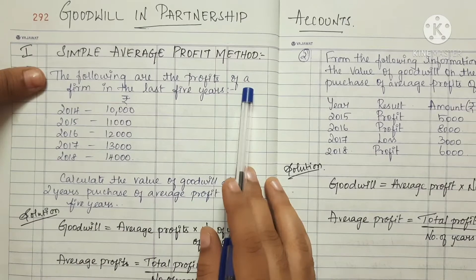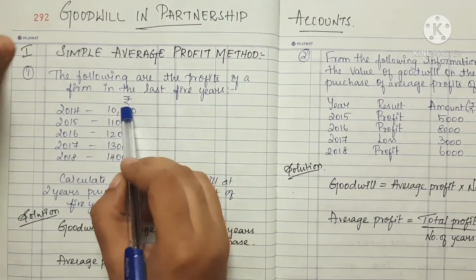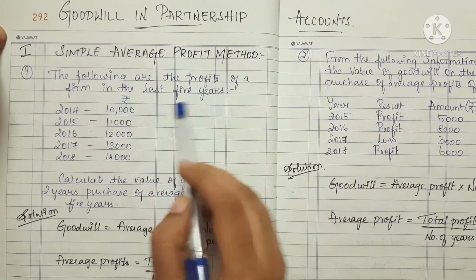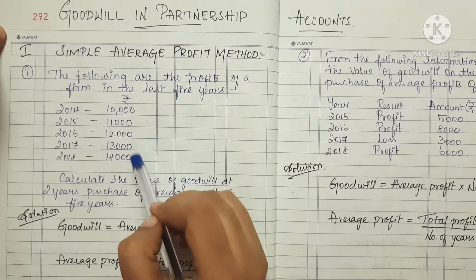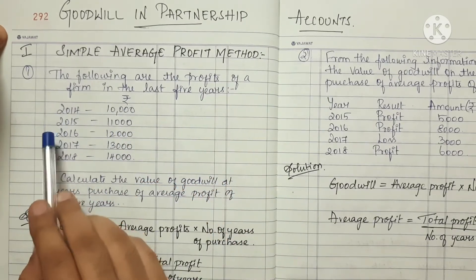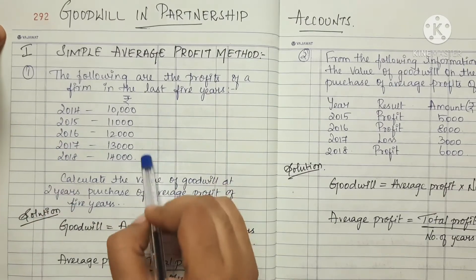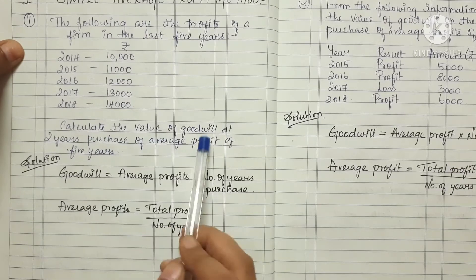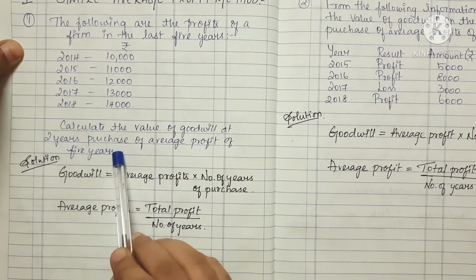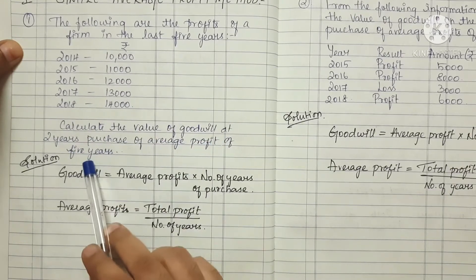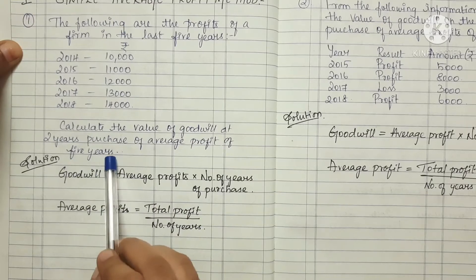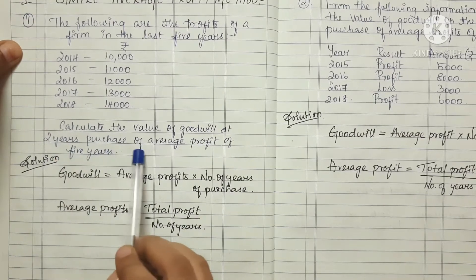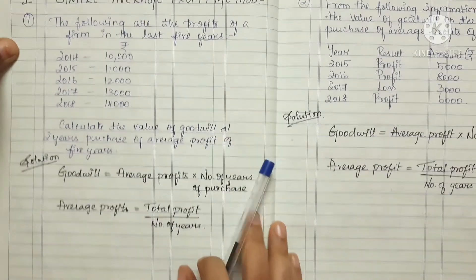Going to the Simple Average Profit Method example: the following are the profits of the firm in the last 5 years - 2014, 2015, 2016, 2017, 2018. Calculate the value of goodwill at 2 years of purchase of average profit of 5 years.